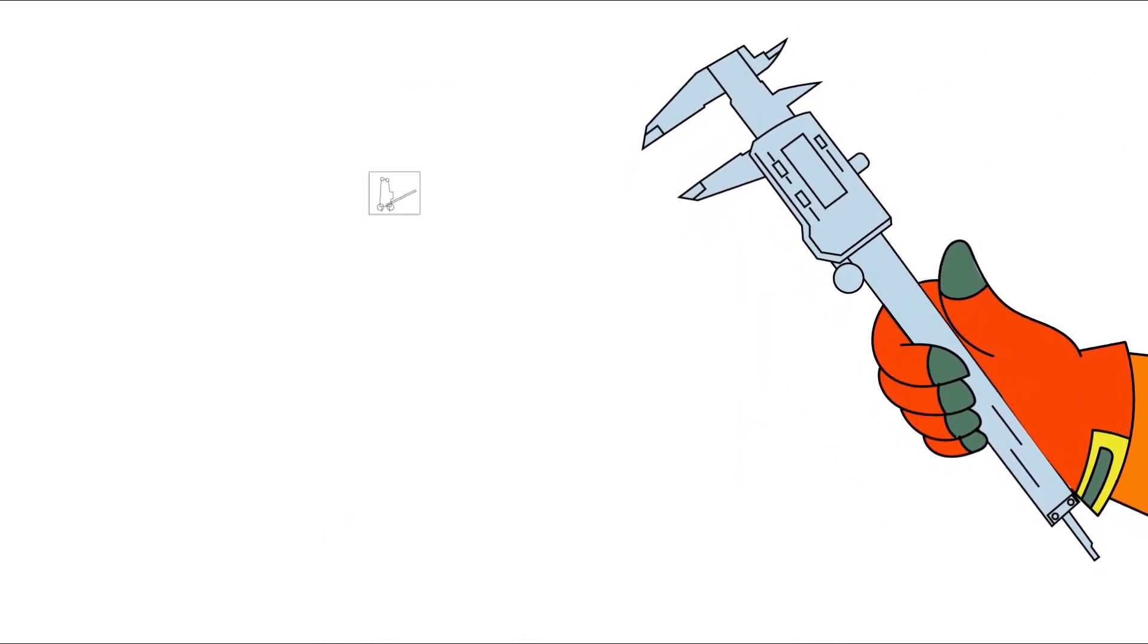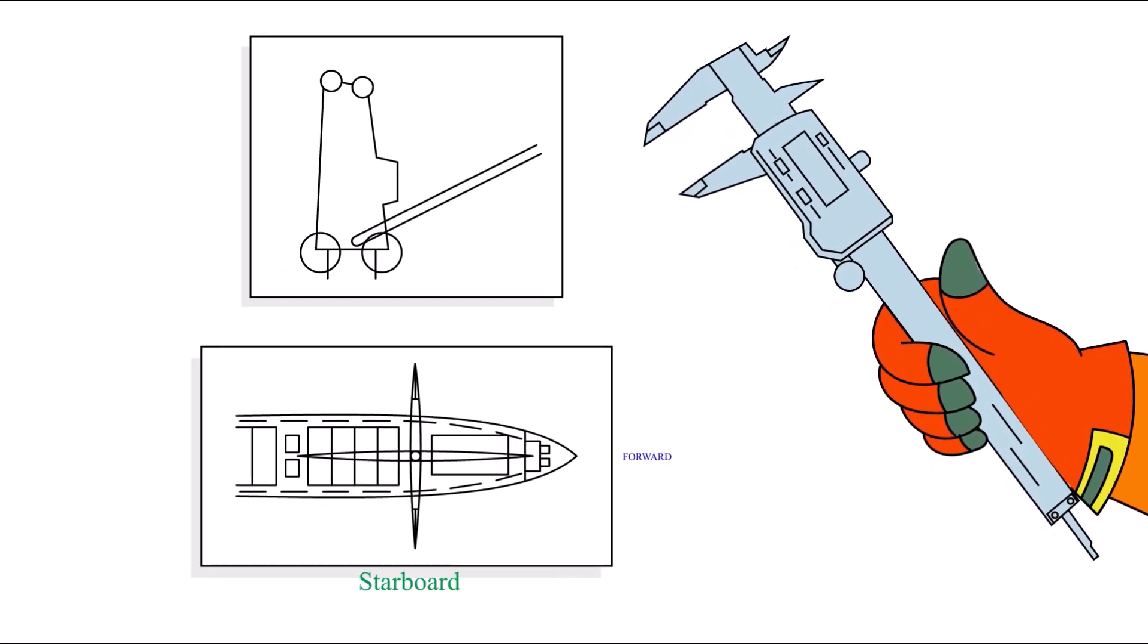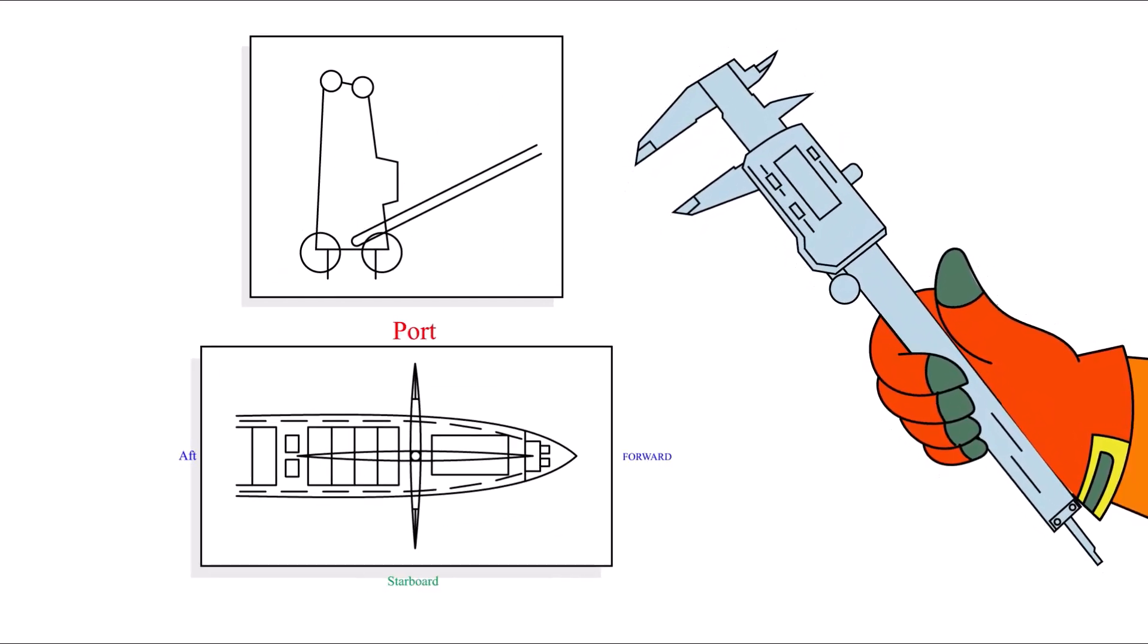Measurements need to be taken accurately and recorded from four positions with the jib forward, to starboard, aft, and to port.